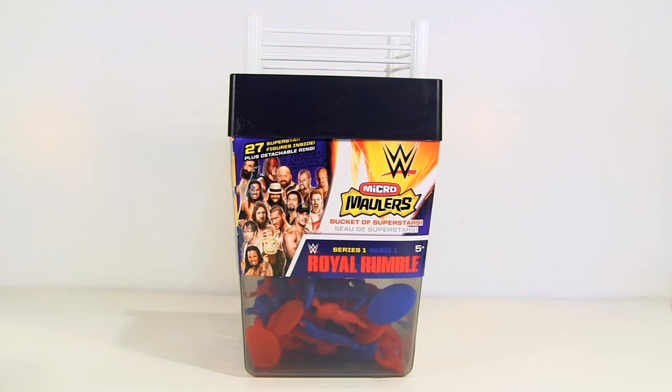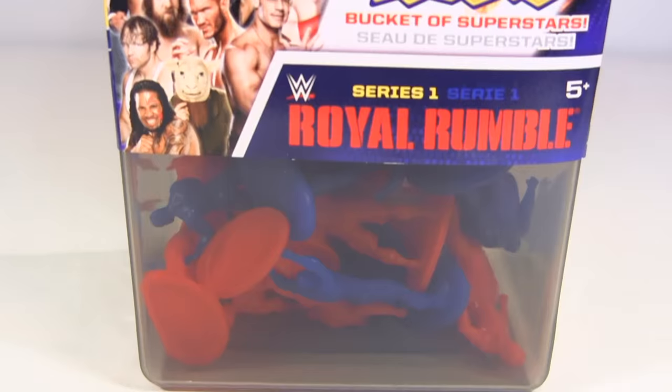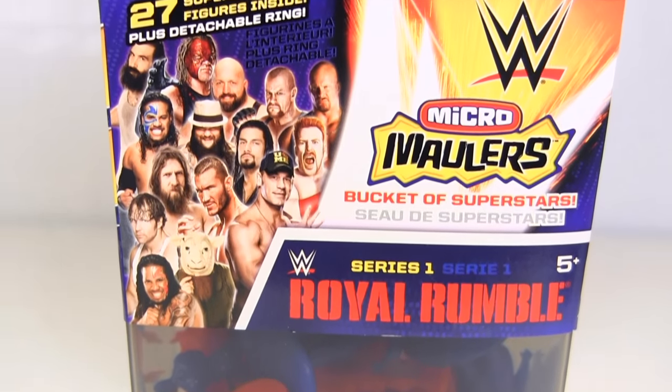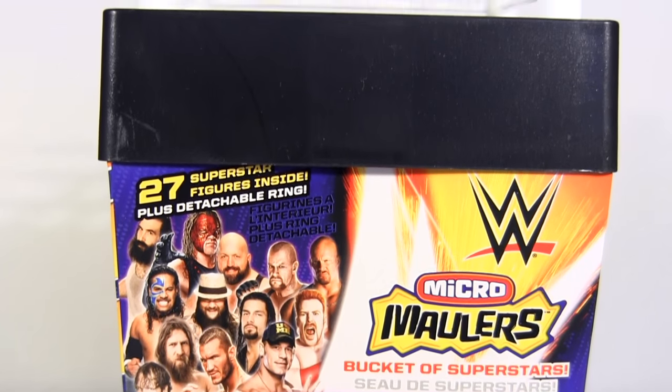Hey everybody, it's Glenn. Back in this video with the WWE Royal Rumble Micro Maulers Bucket of Superstars. I stumbled across this on Amazon for just four dollars, so I was like, yeah, why not?